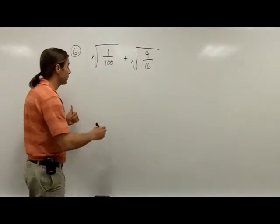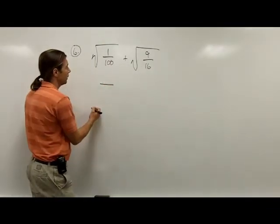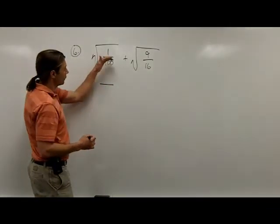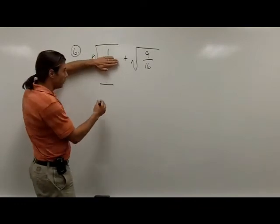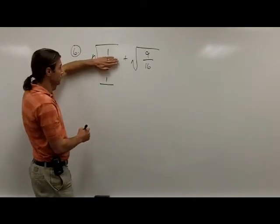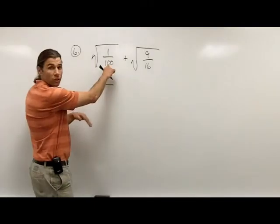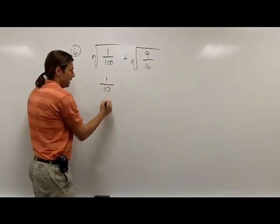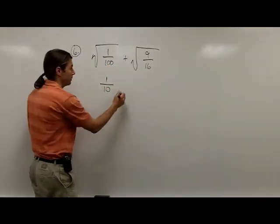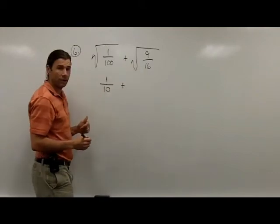Well, the square root of a fraction is going to be a fraction. I'll write a fraction down here. I just think what number times itself is going to give me 1 - that will be the numerator of this fraction. What number times itself will give me 100? That's 10. That will be the denominator of the fraction.